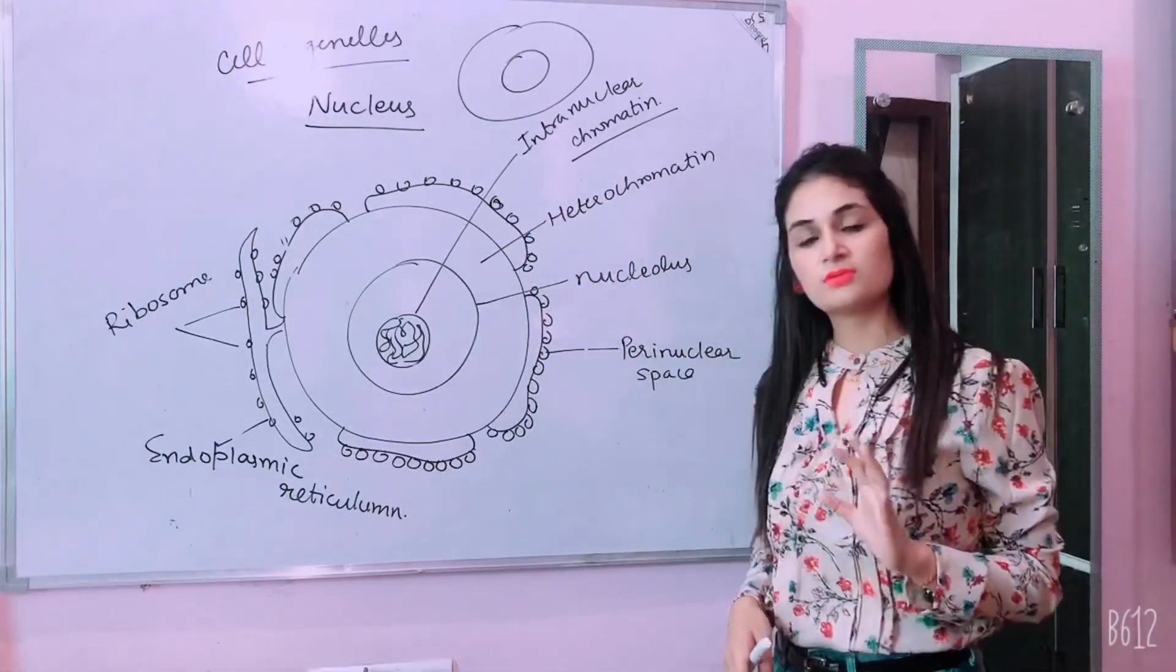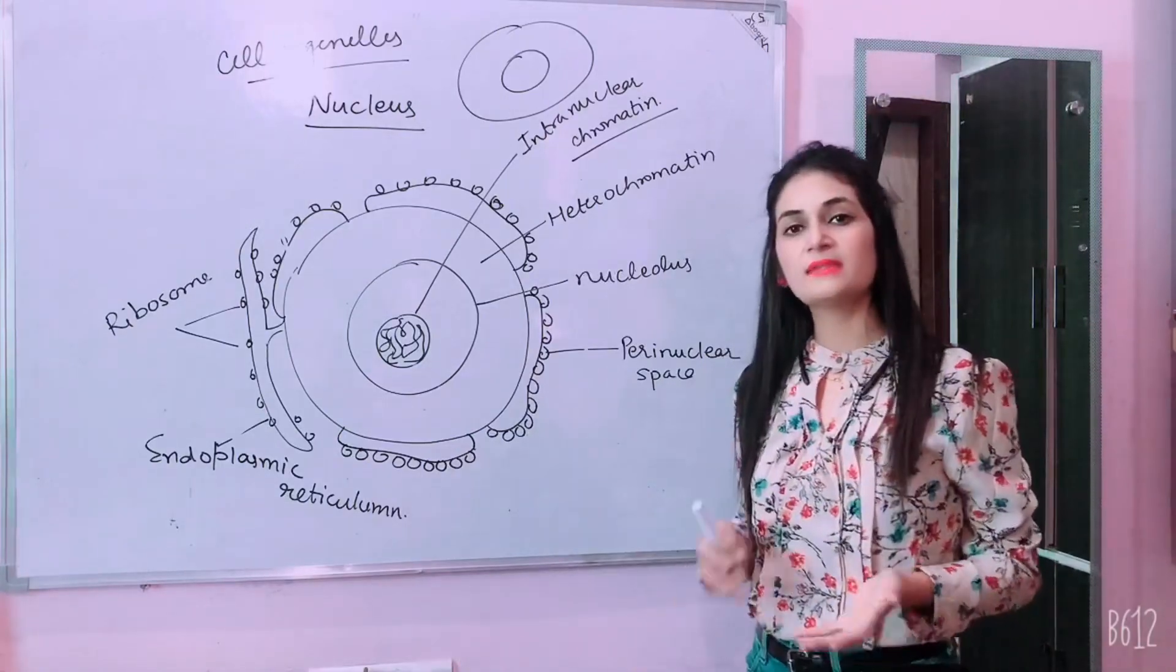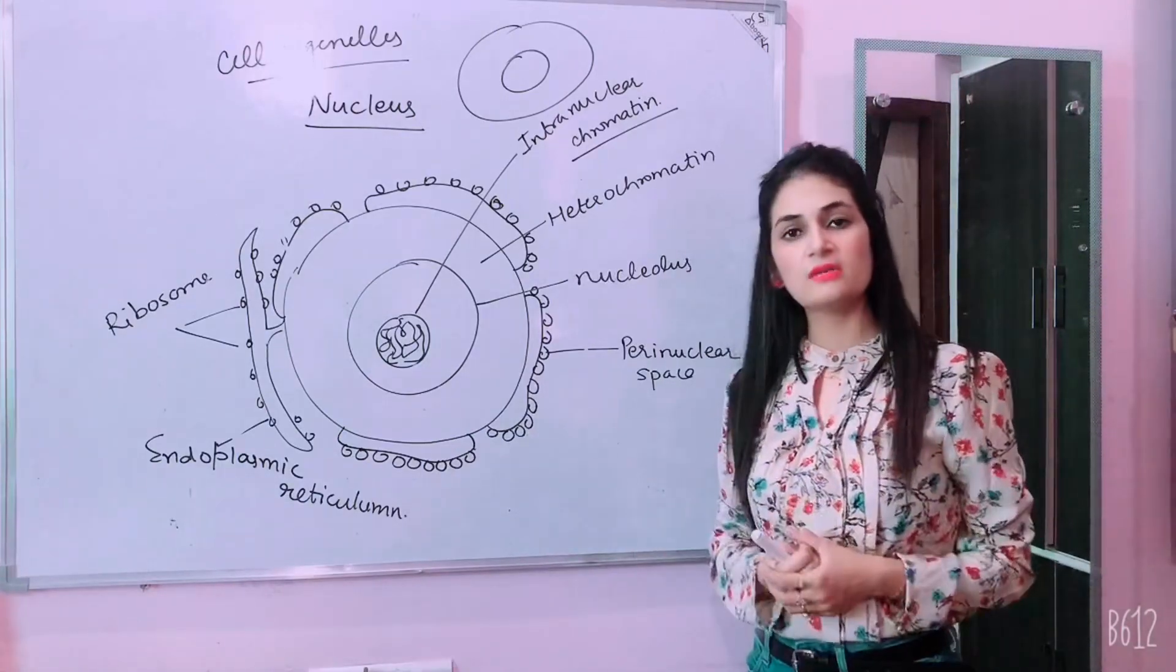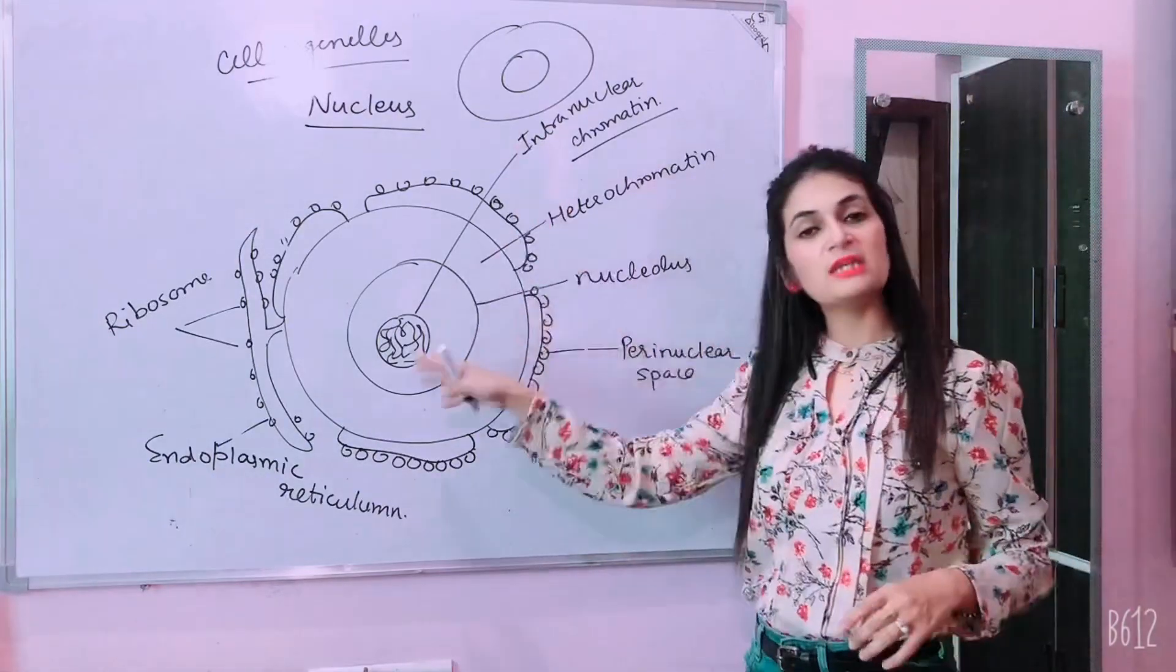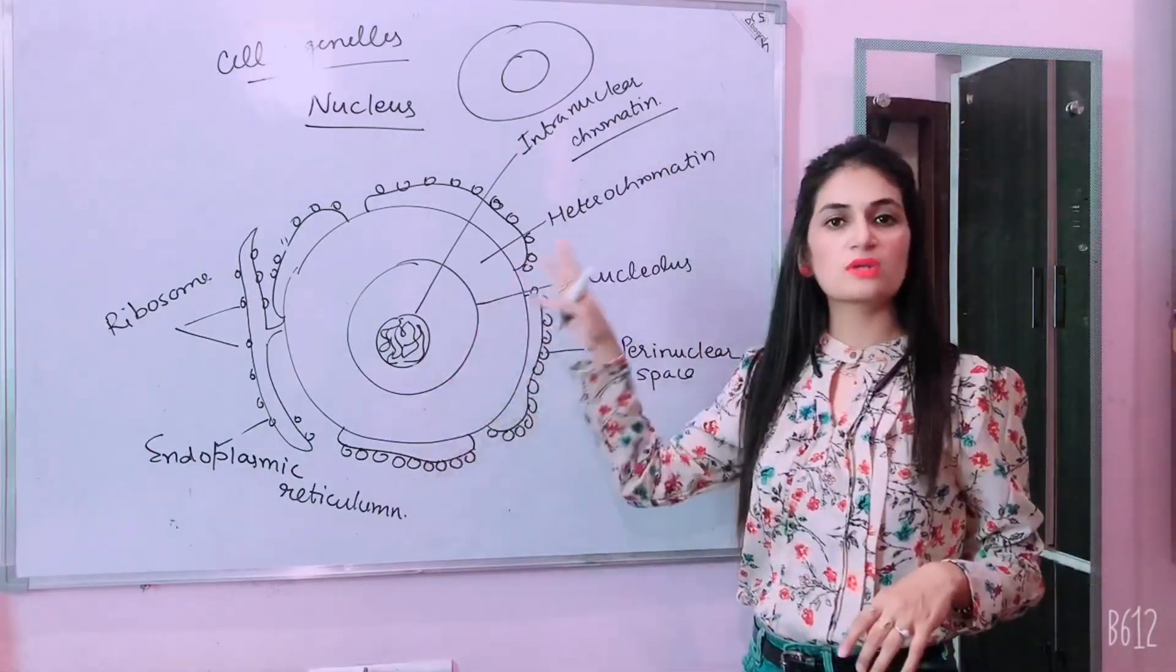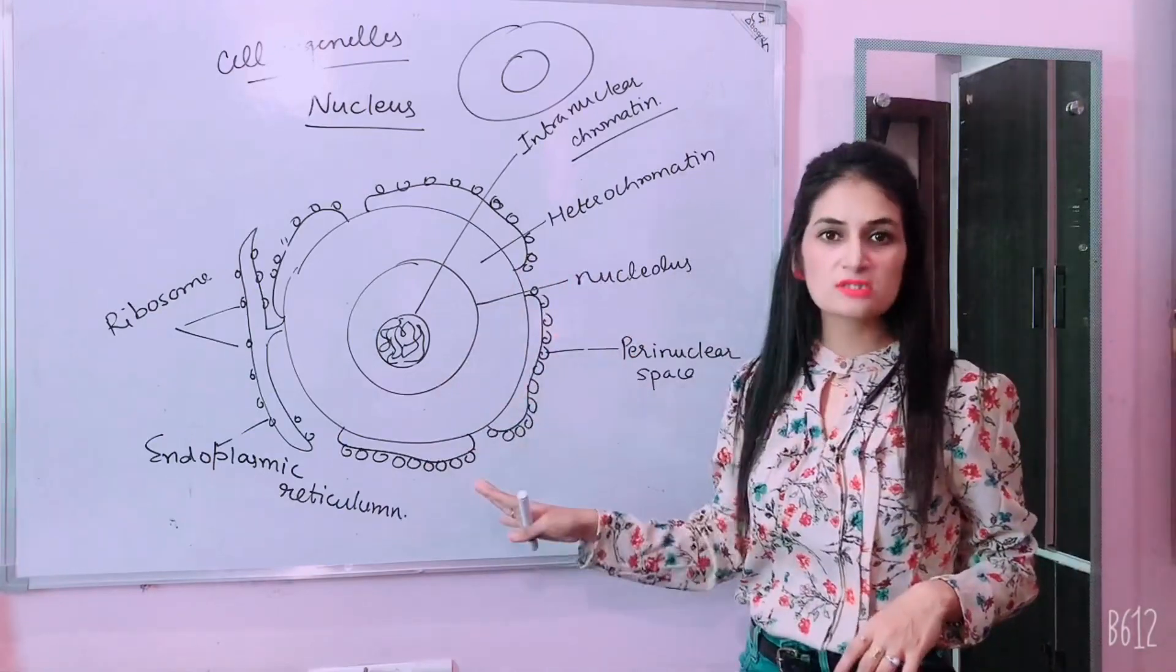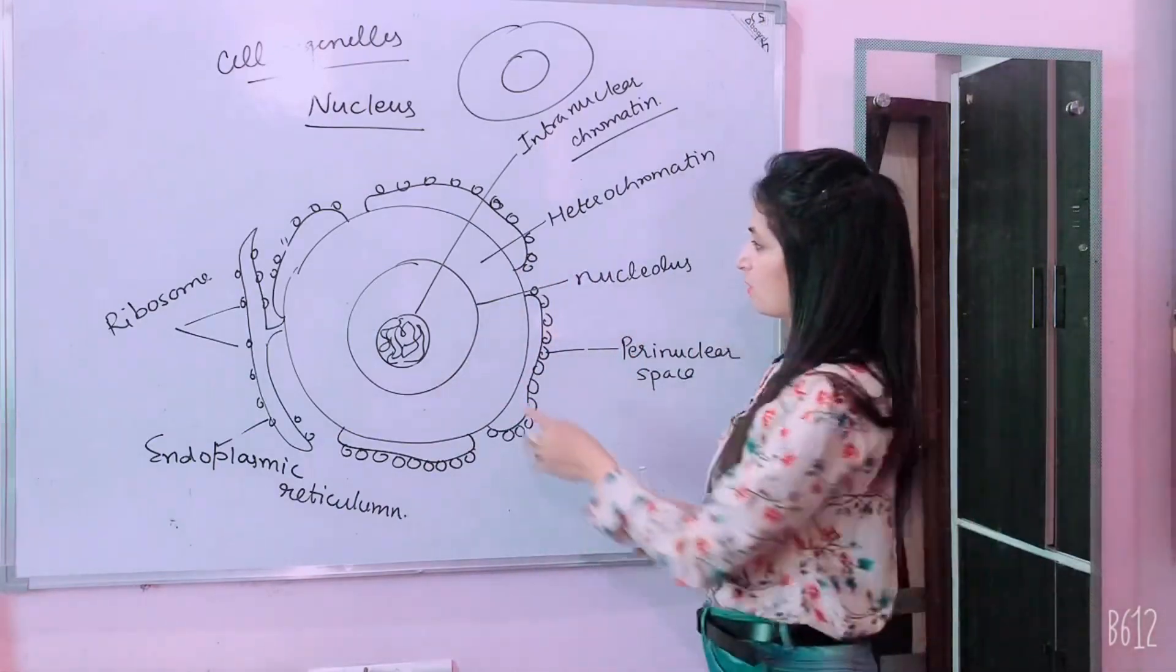Intrachromatin. Intranuclear chromatin. This is a genetic material which has parents and babies. Nucleolus, which stores this material, RNA, proteins, and amino acids. What will it be? Storage.